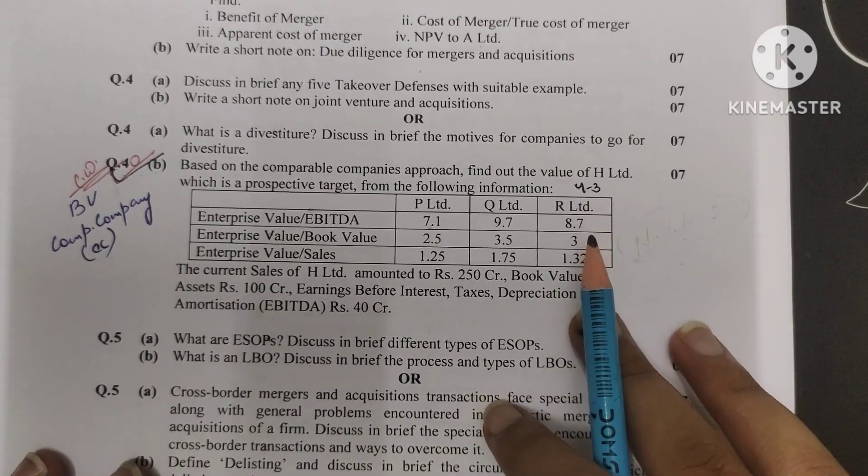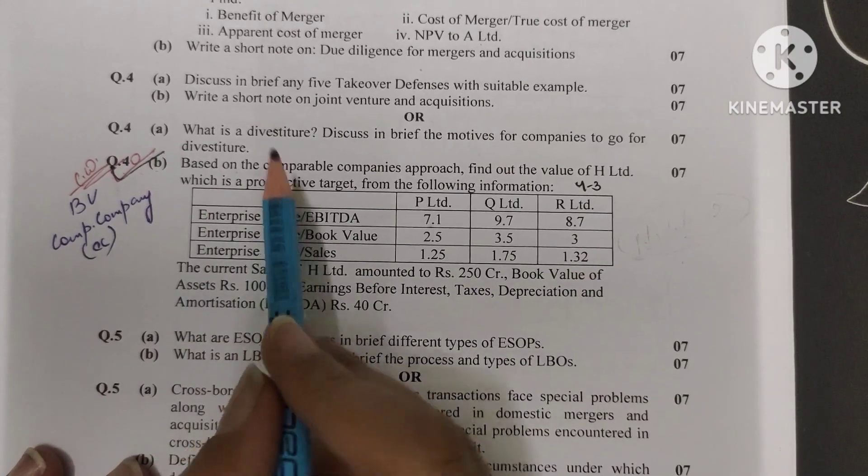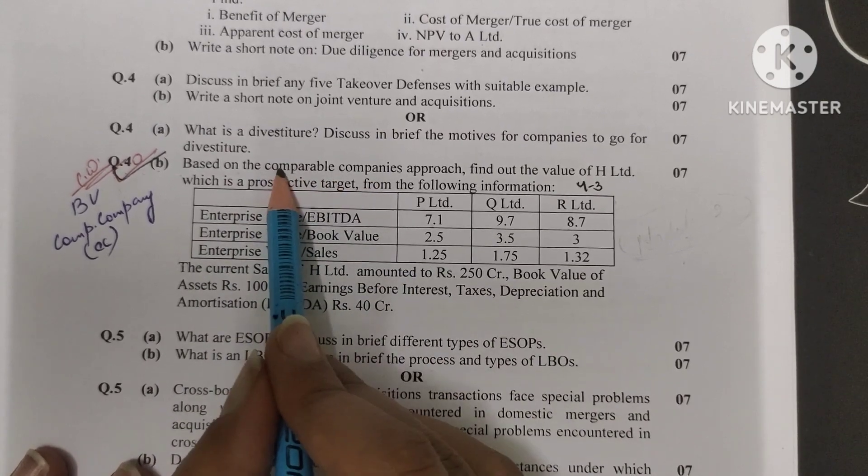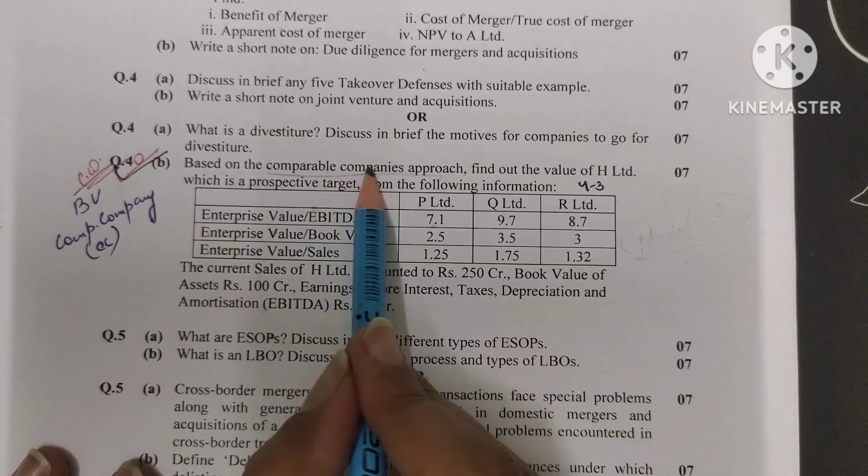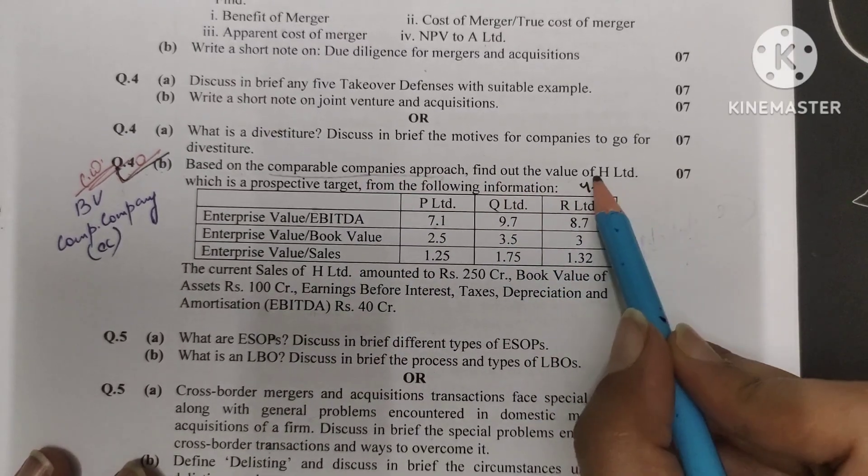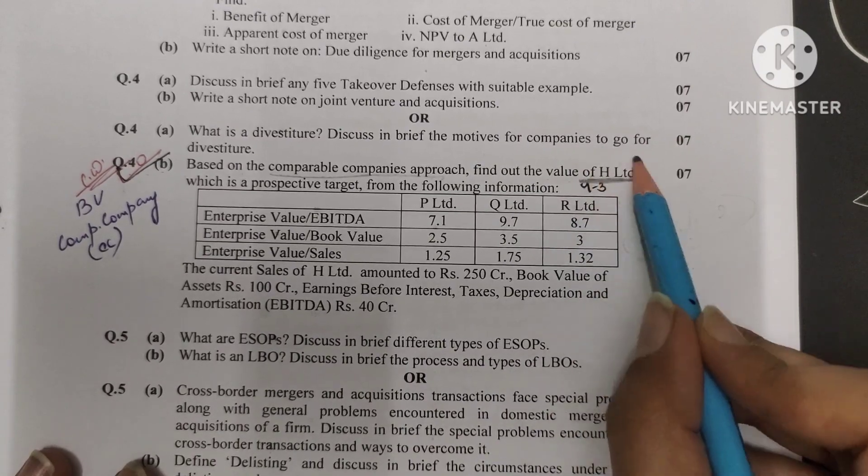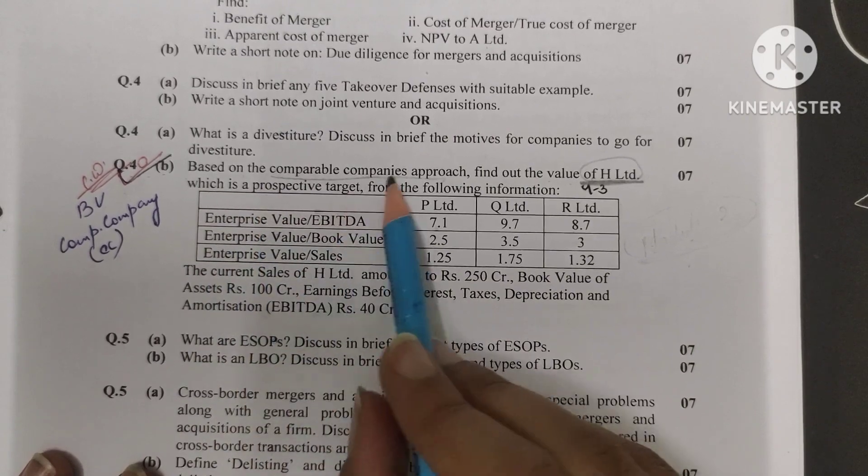It is a question paper from winter 2013. We are going to solve question number 4b. Based on comparable company approach, you have mentioned earlier, what is comparable company approach? Find out the value of H Limited. You have to find which company value, the value of H Limited. It is the main company which is the prospective target.